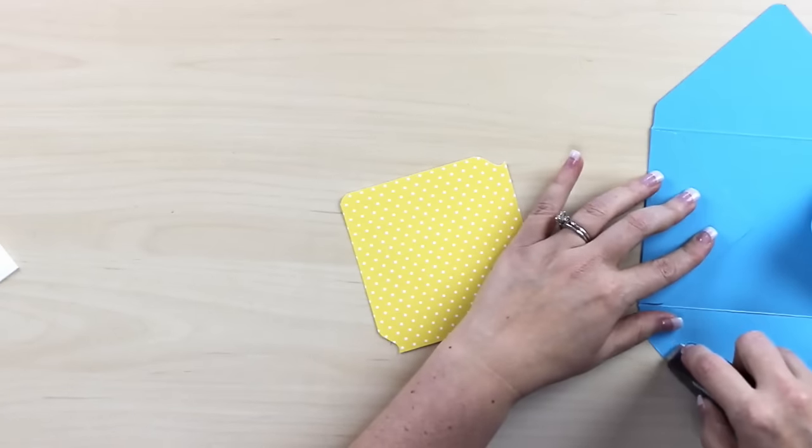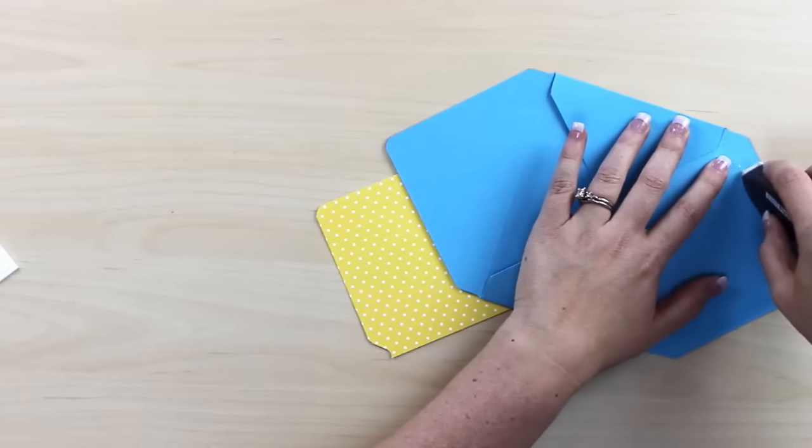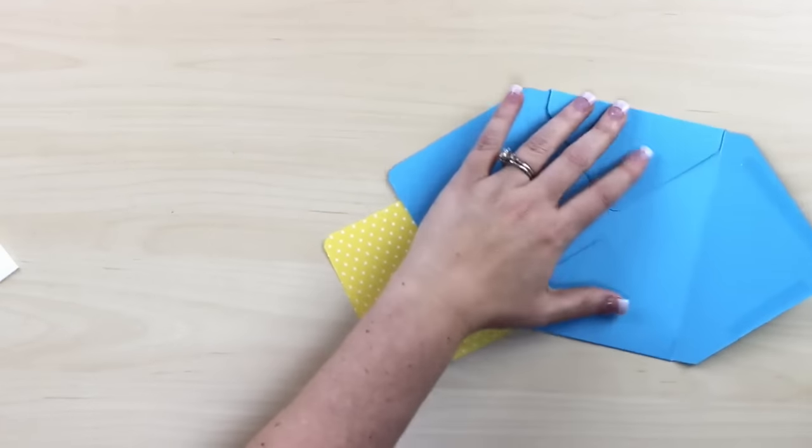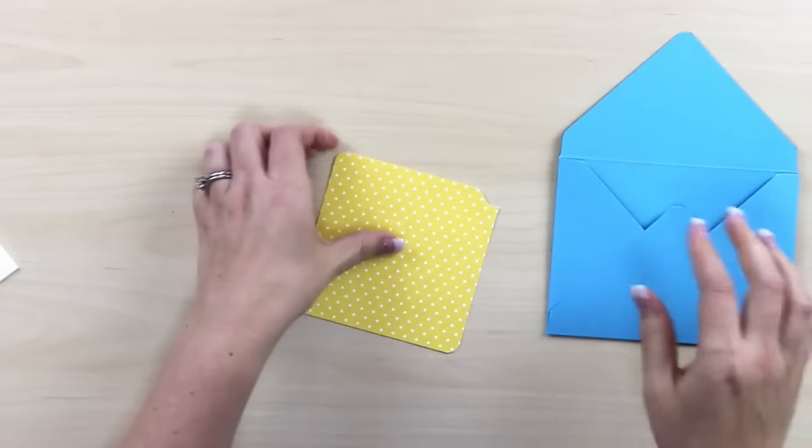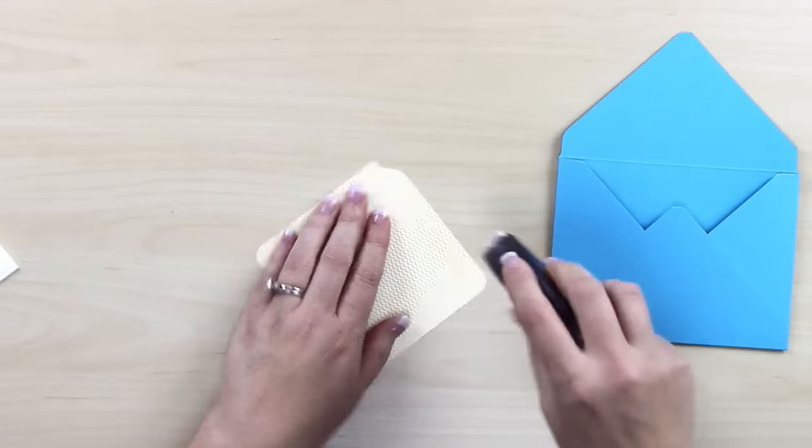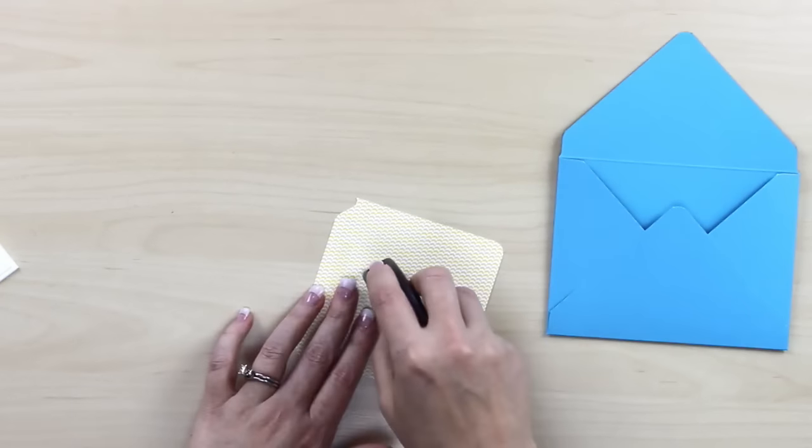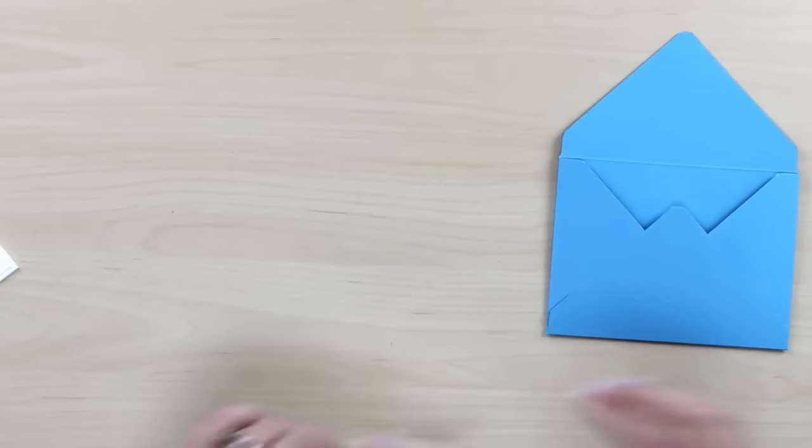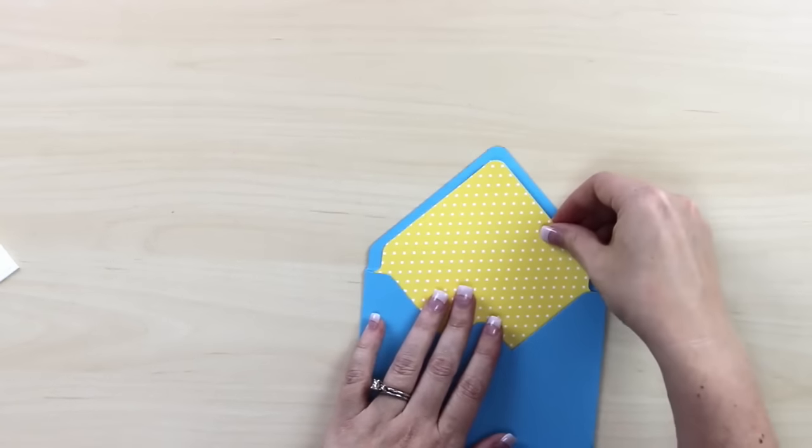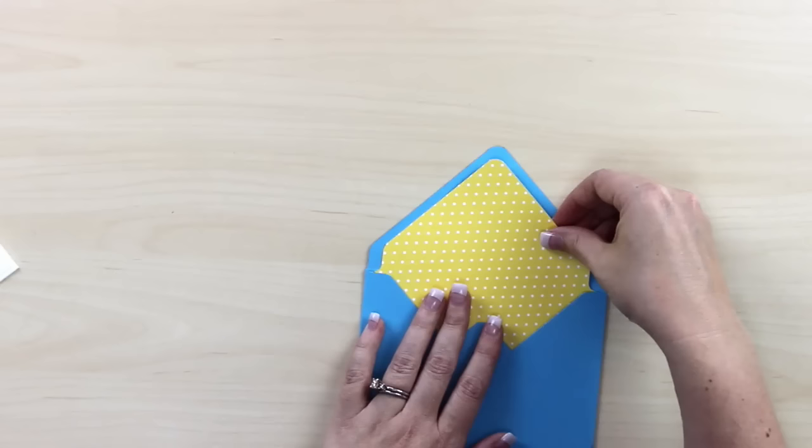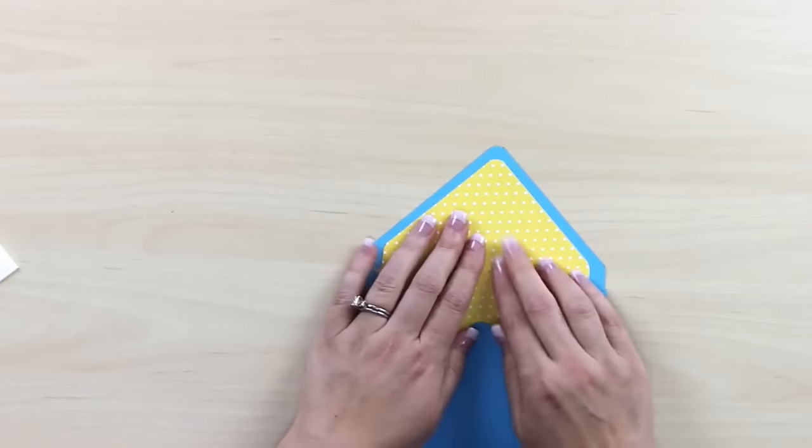And I'm going to put adhesive on my bottom flap. There we go. And I'm just going to go ahead and fold it up. All right, now for this piece, I'm going to put adhesive on the top section. I'm not going to worry about it on the bottom section. But now I can slide this into my envelope, get it nice and lined up, and then press down.